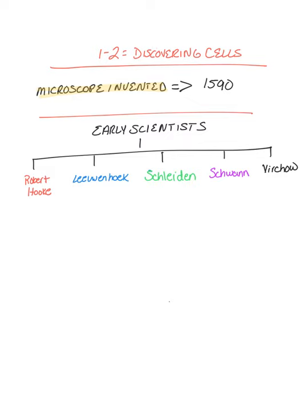Robert Hooke was one of the first people to observe cells in 1663, and he gave cells their name. The next person is Leeuwenhoek, a Dutch businessman. He was the first to see tiny unicellular organisms called bacteria. He studied pond water, and this was around the same time period as Robert Hooke.